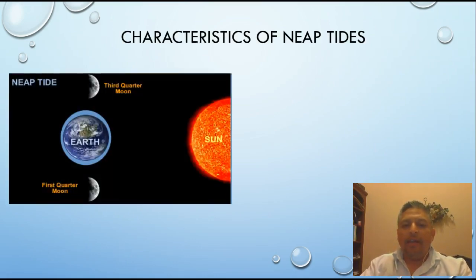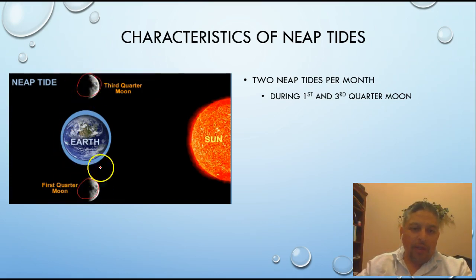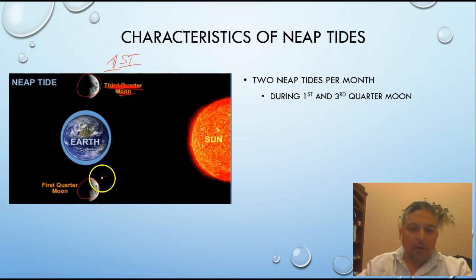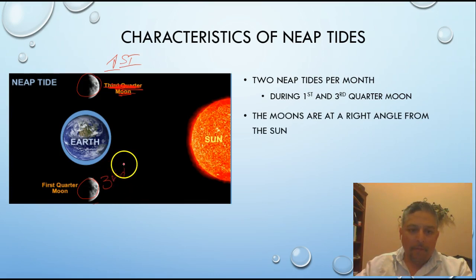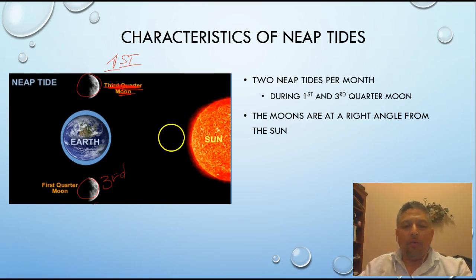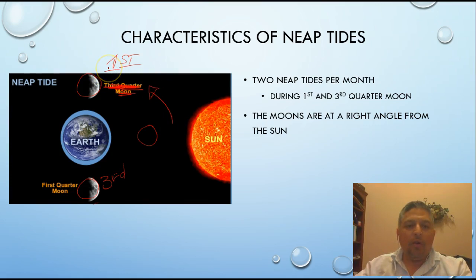Characteristics of neap tides — this one is slightly different from spring tides. There are two neap tides per month: one during the first quarter and the other during the third quarter moon. The picture labels are actually incorrect — the first quarter should be on this side and the third quarter on this side. Counterclockwise motion from the new moon facing the sun gives you the first quarter on this side, not the third quarter as the picture incorrectly shows.